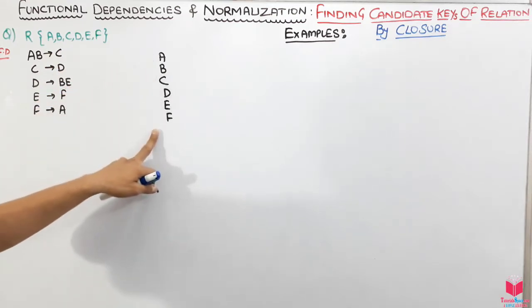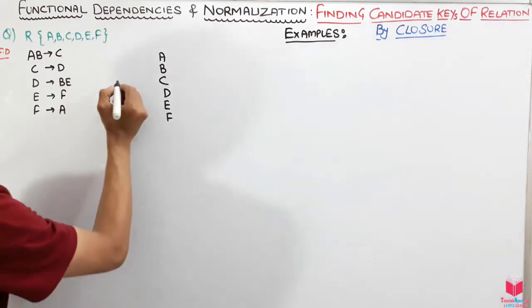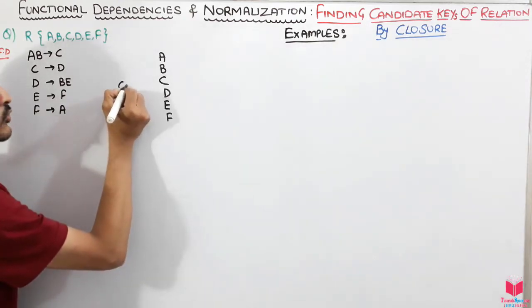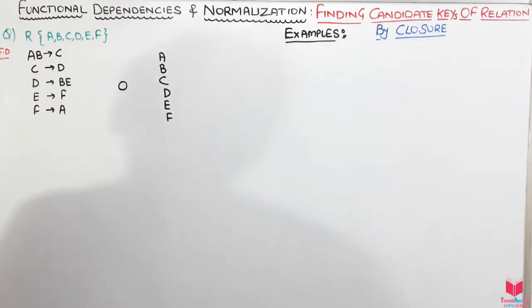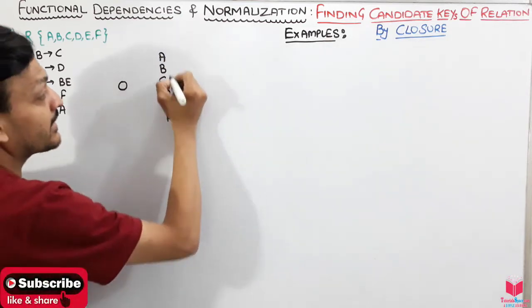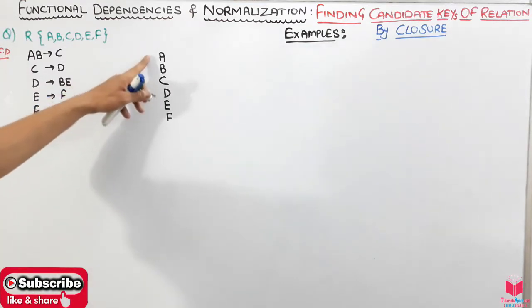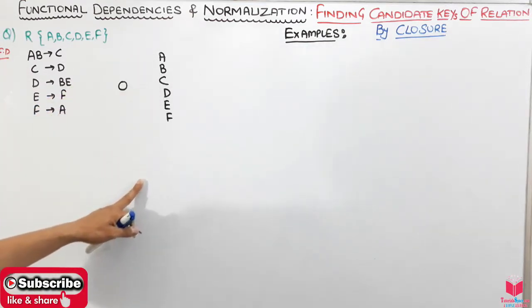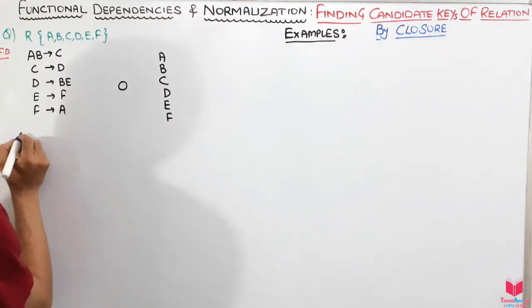All the attributes have been covered on the right-hand side, so there is nothing left for the left-hand side. Since we can't follow the usual strategy I taught last time, we have to take each attribute one by one and find their closure.